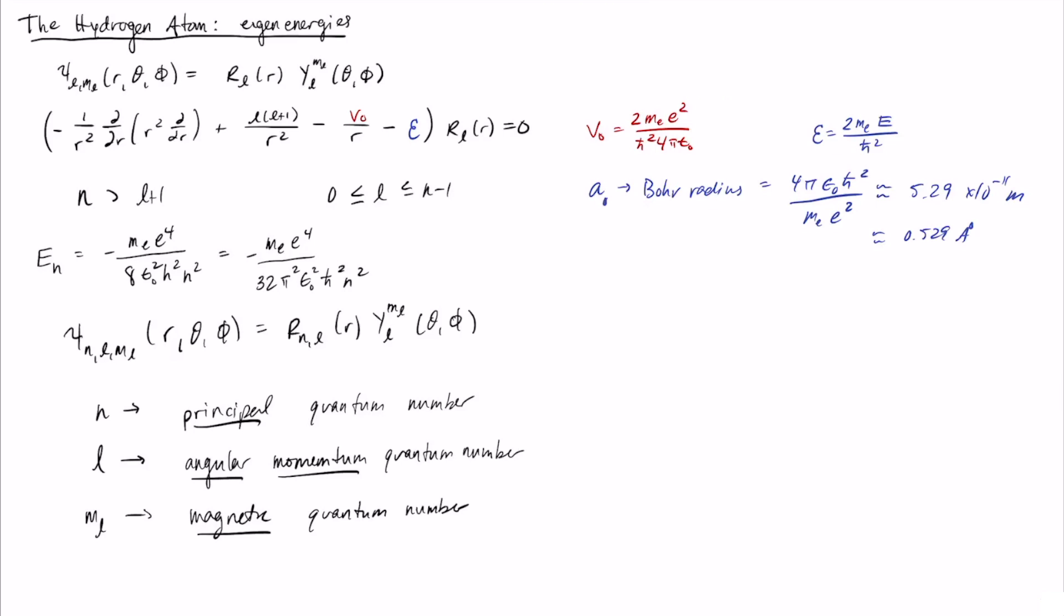Now if we rewrite this in terms of the Bohr radius, this ends up being quite a bit simpler. So in terms of the Bohr radius now, these energies are minus h bar squared over 2 m e a0 squared, still n squared. Okay, but now there's actually one last constant that I want to define that simplifies this even further. We're going to introduce the atomic unit of energy, which is called the Hartree and normally written e h. And this is equal to h bar squared over m e a0 squared.